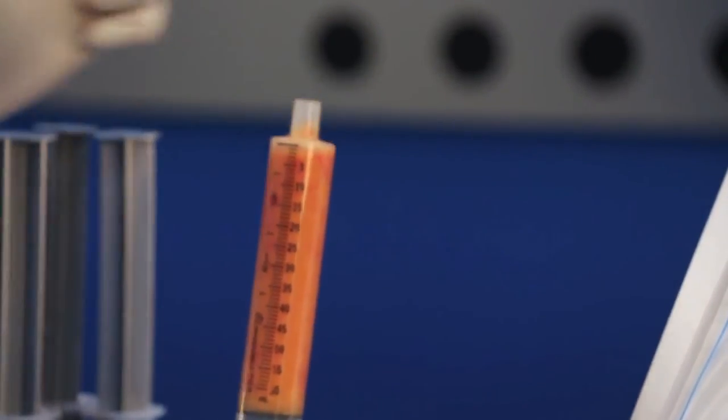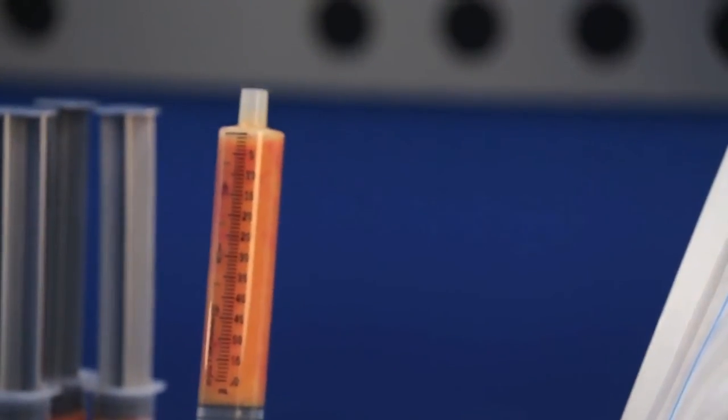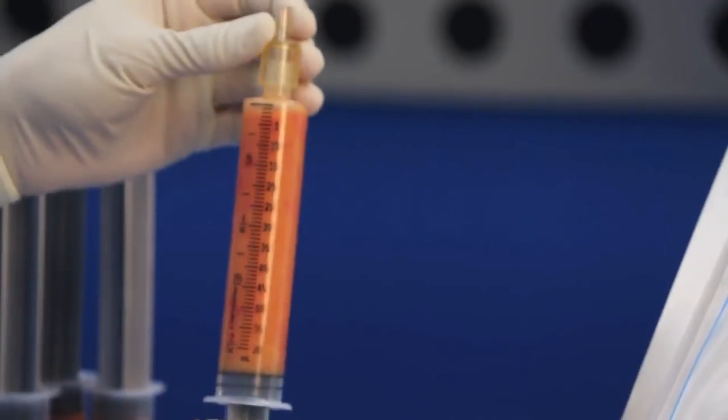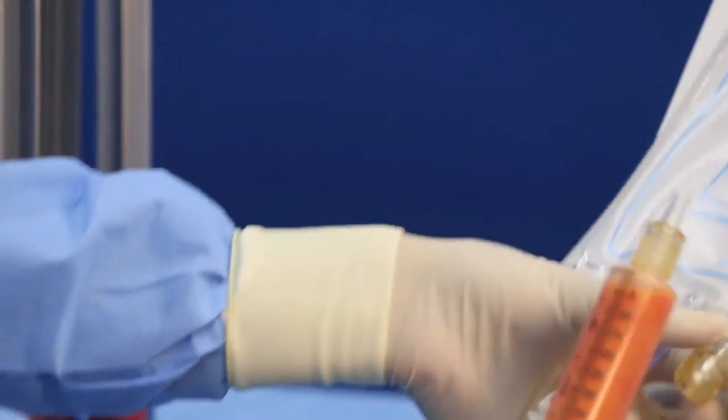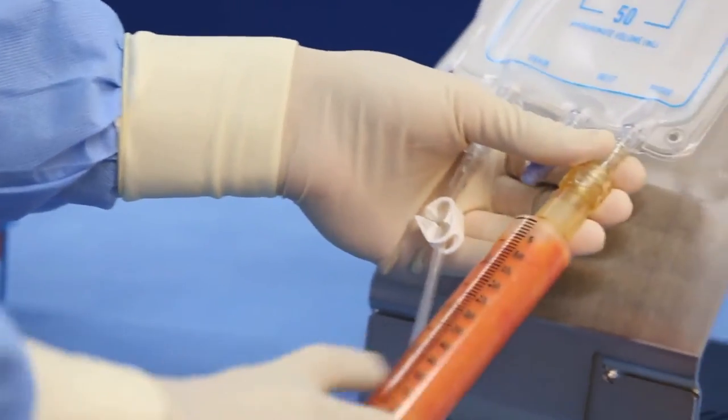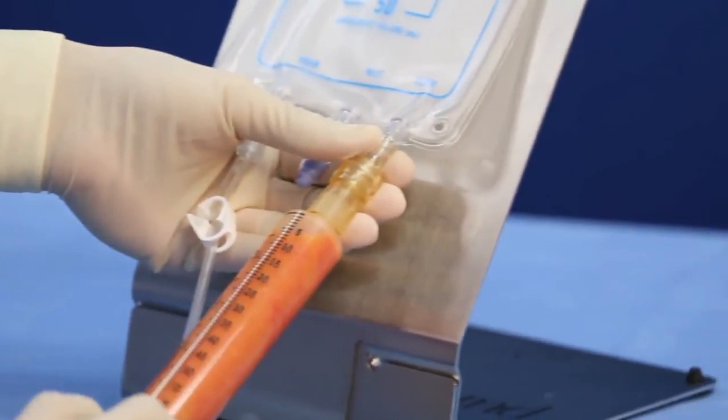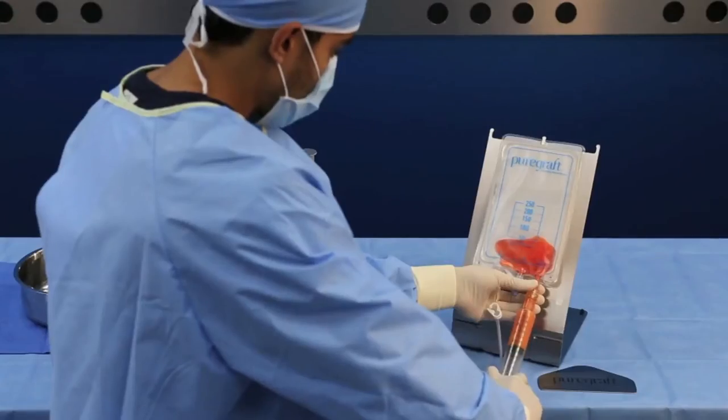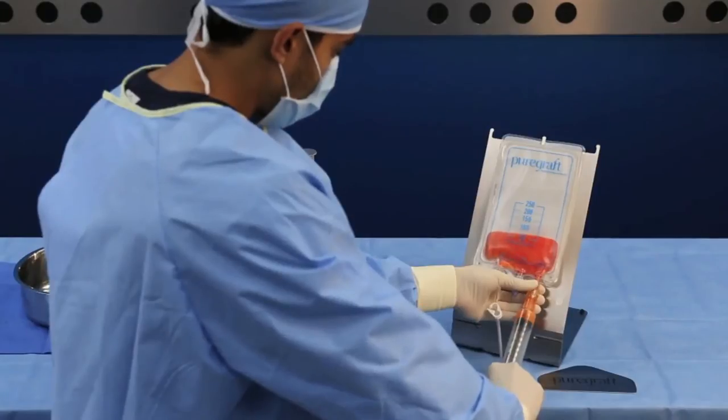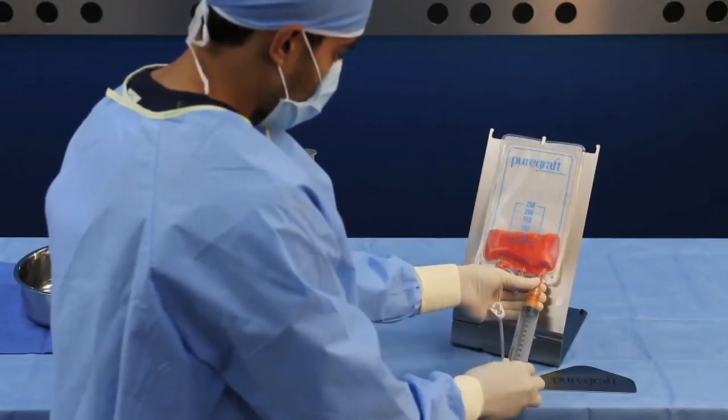Remove the syringe cap and replace it with a tapper. Attach the syringe to the tissue port and transfer the contents into the PureGraft. Repeat until the total desired tissue volume has been introduced.